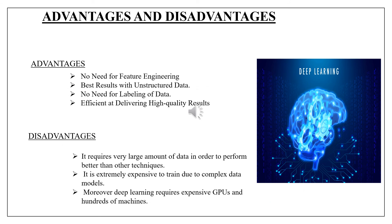The advantages of deep learning include: no need for labeling of data, best results with unstructured data, no need for feature engineering, and efficient delivery of high-quality results. On the other hand, disadvantages include: it requires a very large amount of data to perform better than other techniques, it is extremely expensive to train due to complex data models, and deep learning requires expensive GPUs and hundreds of machines.